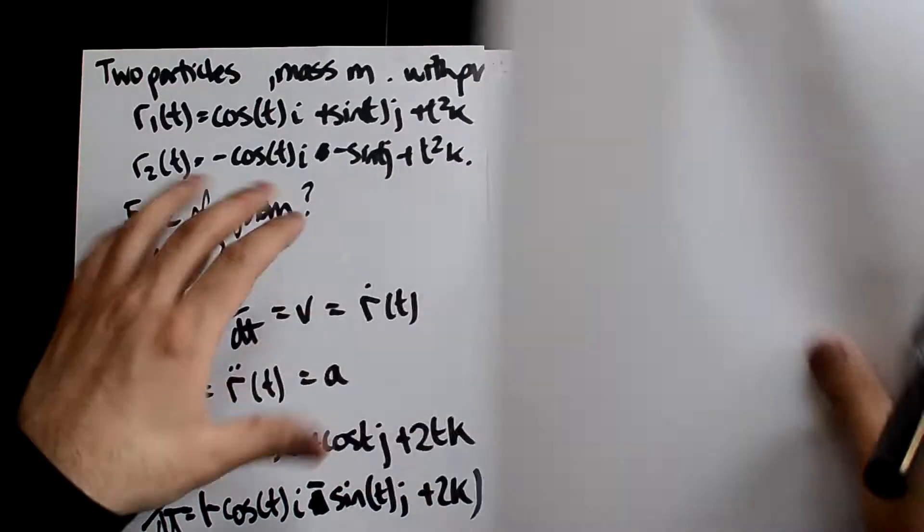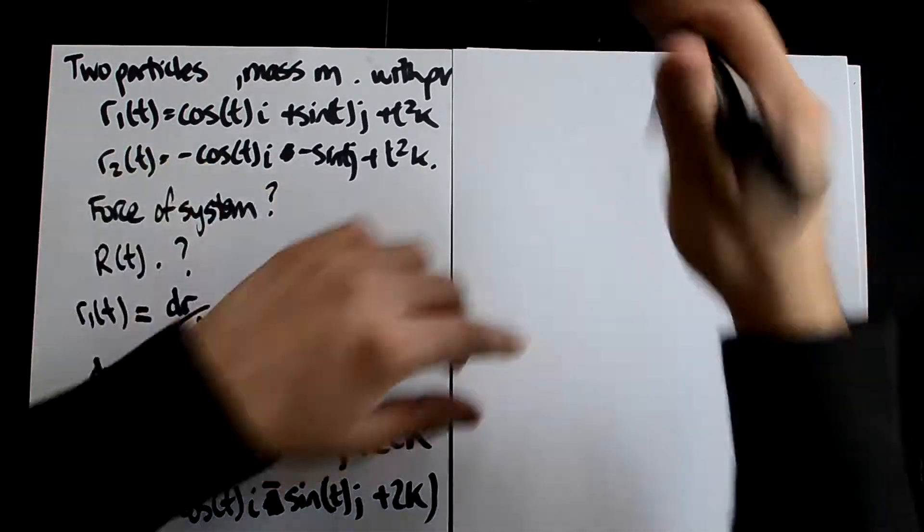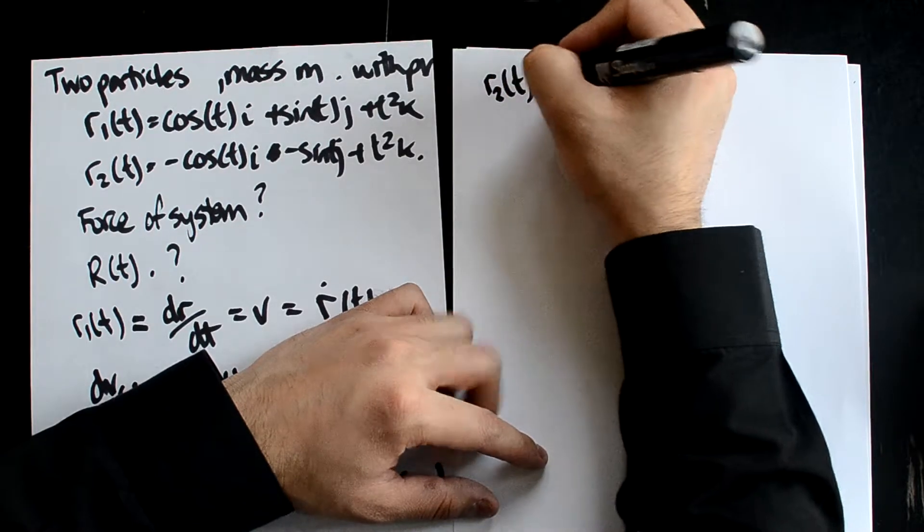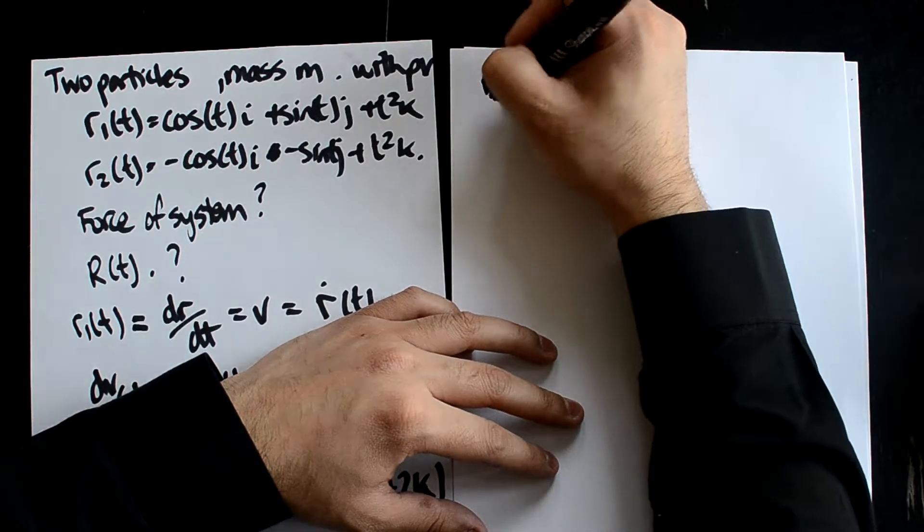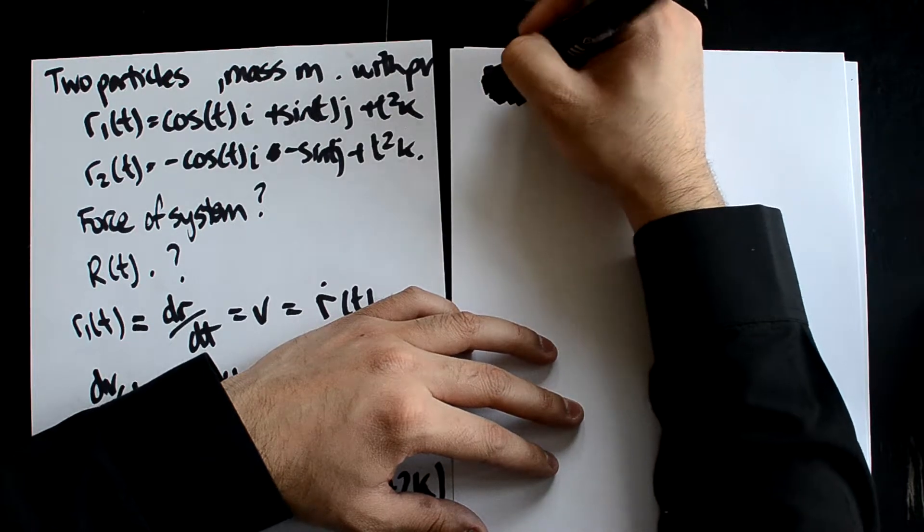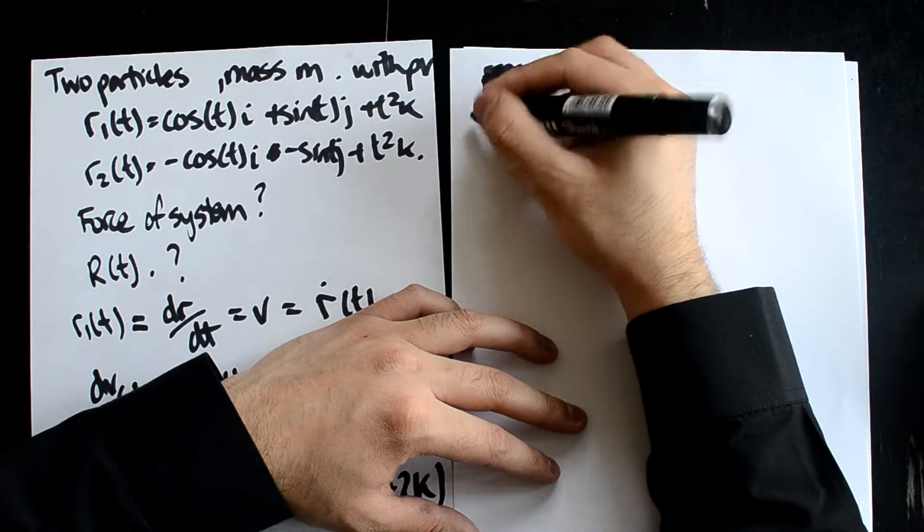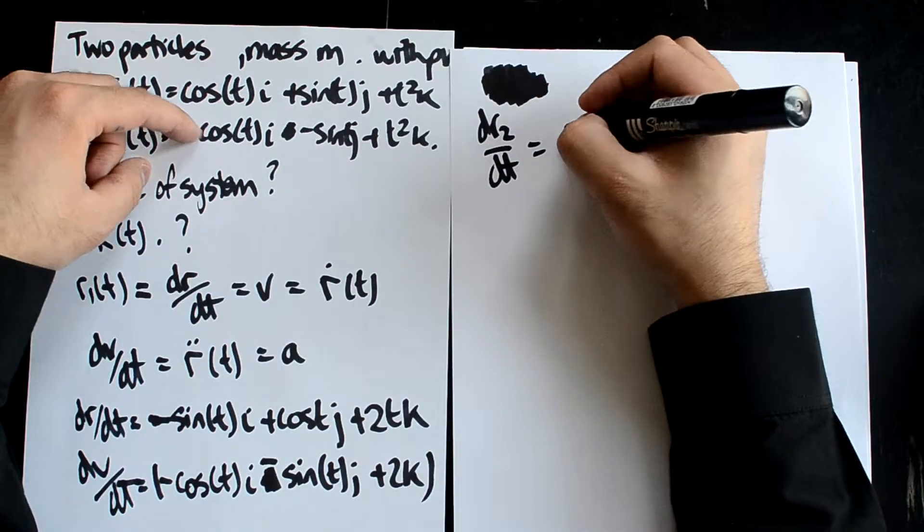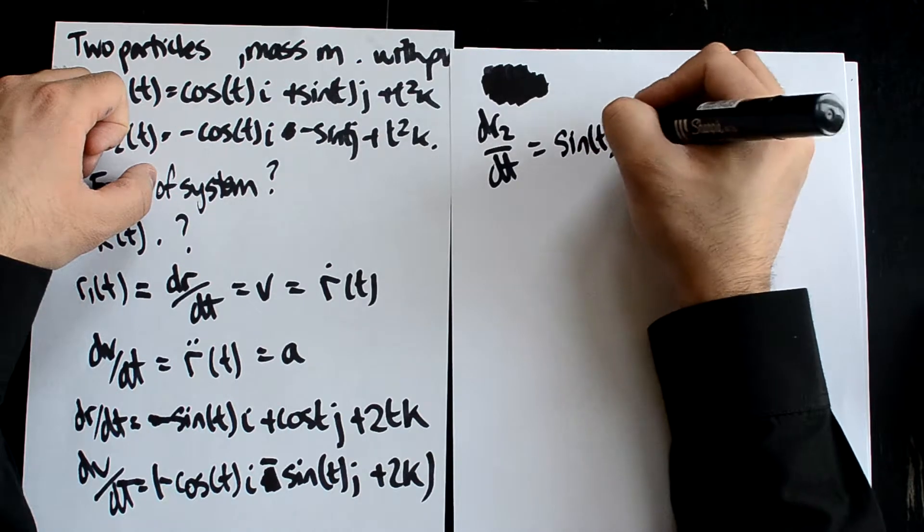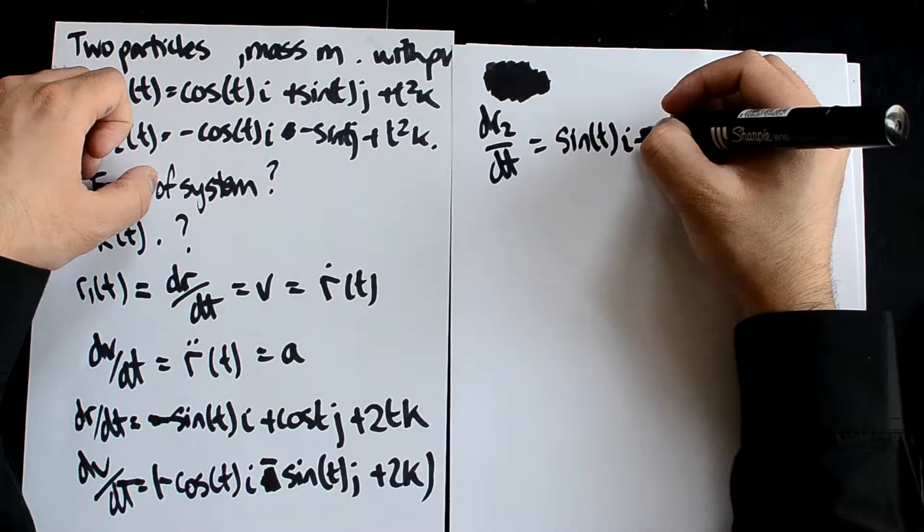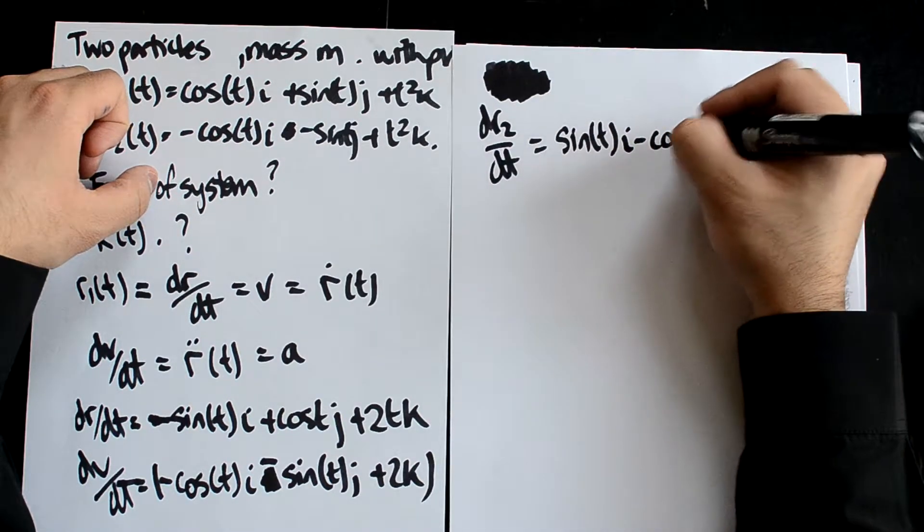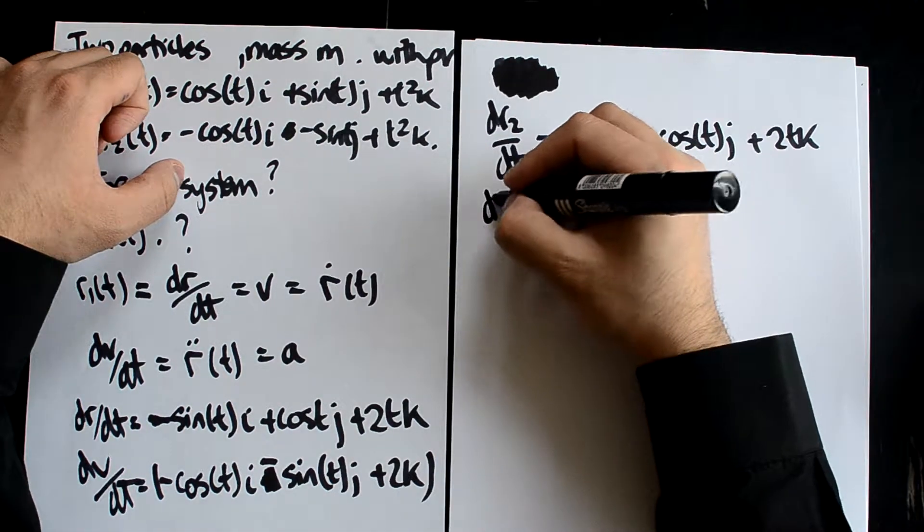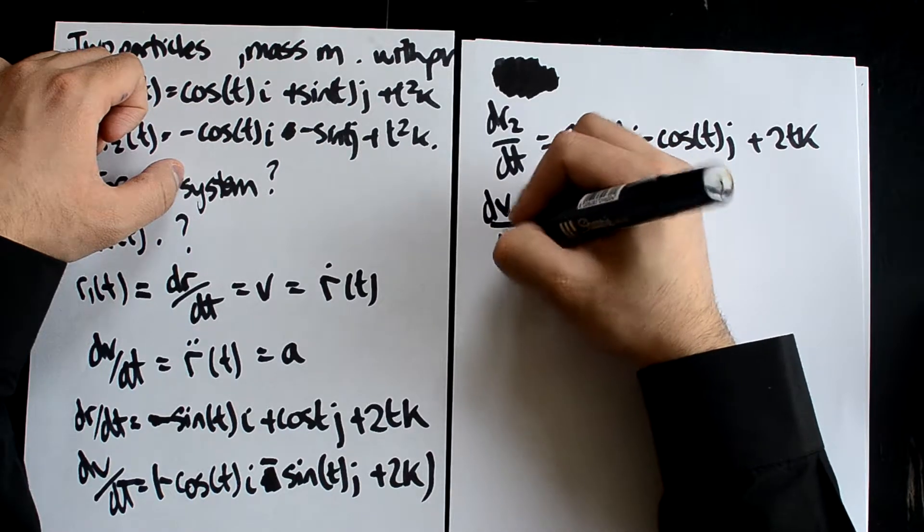Let's get a new little piece of paper. And now we're going to do the same thing to R2. So we have R2(t), let me do dr/dt, dr2/dt, which is just going to be this differentiated, which is going to be sine(t)i minus cos(t)j plus 2tk.